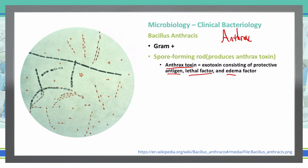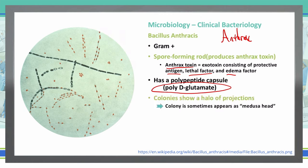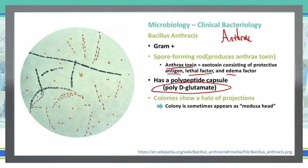Bacillus anthracis also has a polypeptide capsule — specifically a polyglutamate capsule — that helps protect it. You'll often see colonies that show a halo of projections. Sometimes we call this the 'medusa head' appearance. If you recall Greek mythology, Medusa is a female figure with snakes curling out from her head, and that is what you can expect to see from a Bacillus anthracis colony.